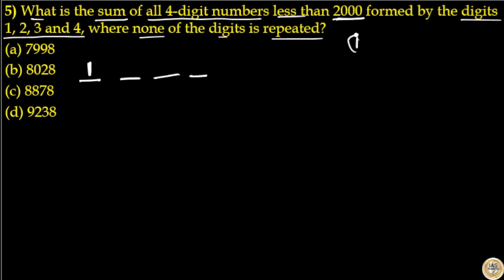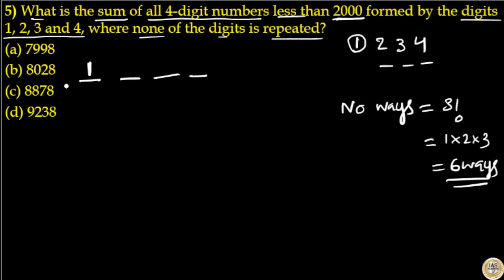The first digit 1 is fixed, then the remaining digits are 2, 3, and 4. Three digits and 3 places. The number of ways this can be done is 3 factorial, because there are 3 digits and 3 places. So 3 factorial is 1 into 2 into 3, which is equal to 6 ways.